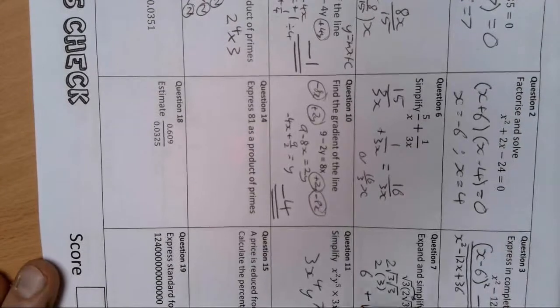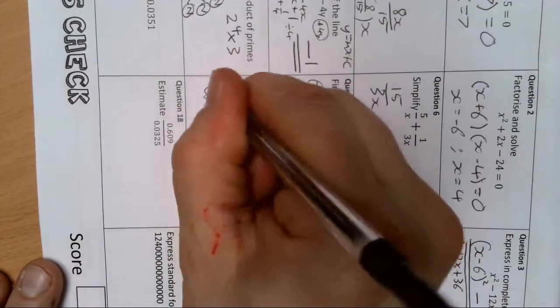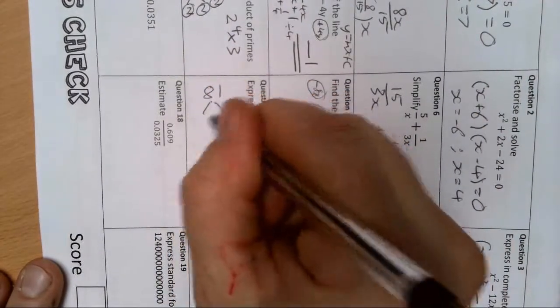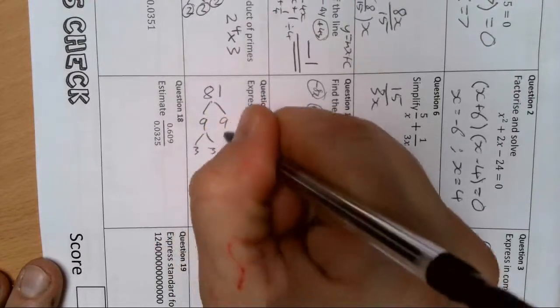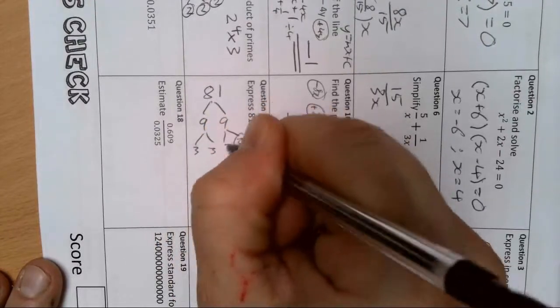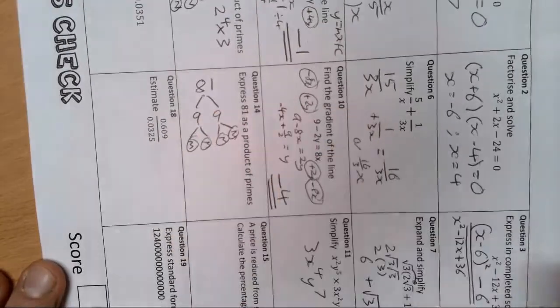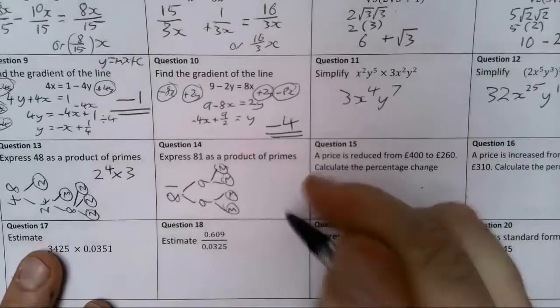81 as a product of primes. Well this one you can probably spot straight away anyway, but it's just 9 times 9, and 9 is 3 times 3, and that is 3 times 3. So we've got 3 to the power 4.